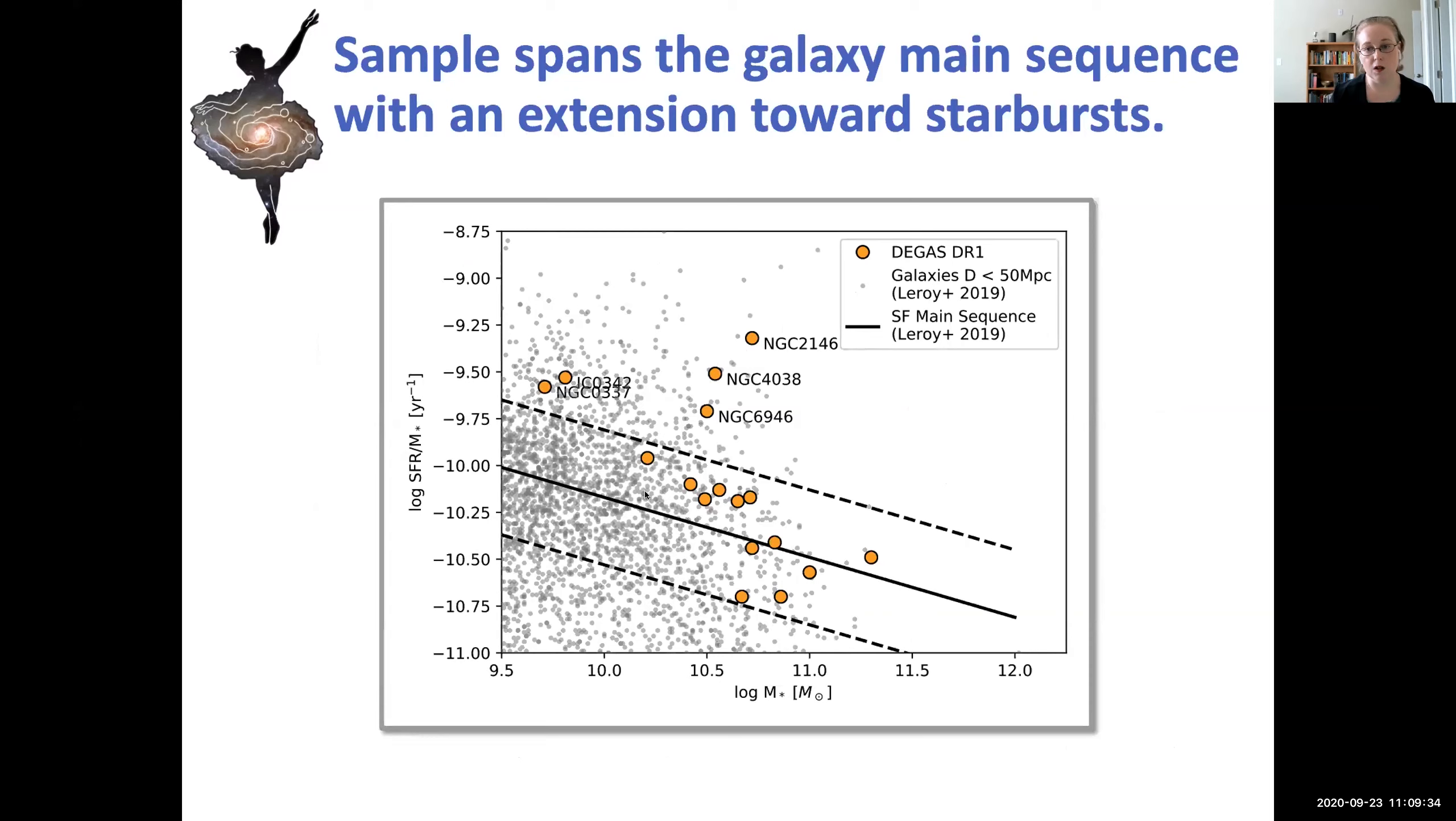You can see they fall largely along the star forming main sequence with a couple of exciting outliers to the starburst territory. The antennae, NGC 2146, which is almost a LIRG, and then some other interesting nearby galaxies that you may know and love.